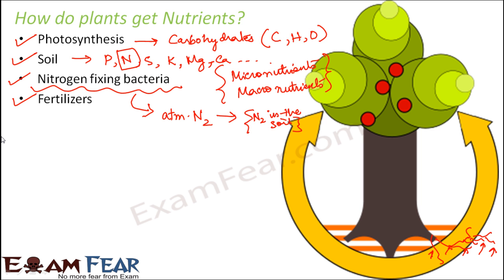These fertilizers will add some additional nutrients like nitrogen, phosphorus, sulfur, sodium, potassium - all these additional things will be added to the soil. That's how the quality of the soil will improve, and the plants will also get those nutrients. So these are some of the ways by which plants get a variety of nutrients which are needed for their growth and development.